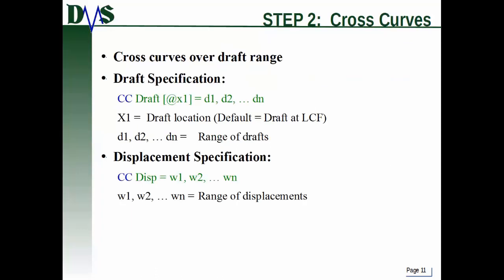Now that the angles are defined in the background, step two is the actual cross curves command. Cross curves are applied over a range of drafts, so you must provide a draft specification. The command is CC (for cross curves), and you can give it as a draft at a location, or as a range of displacements — the same way it works with the GHS command. This will produce the cross curves output, including both tables and a graph if you have your report turned on.